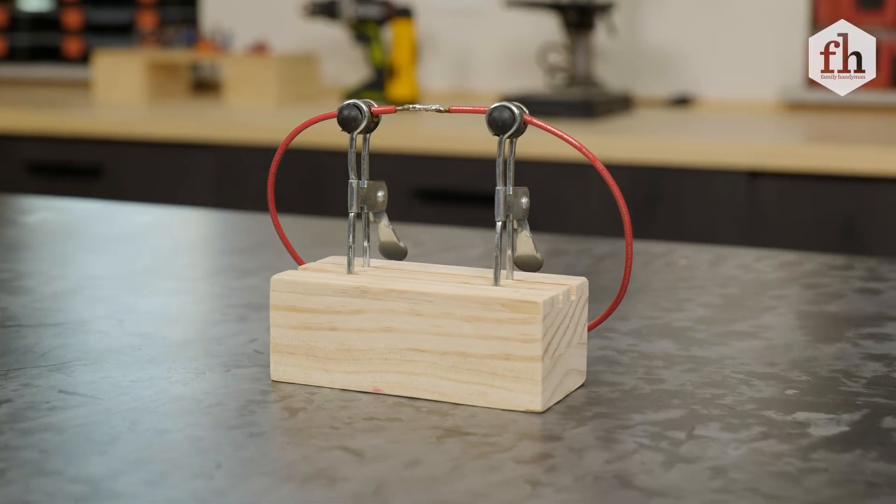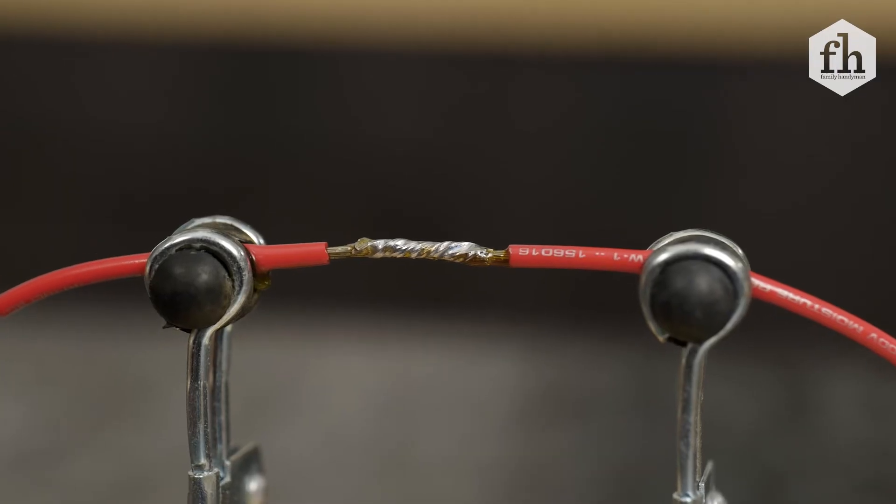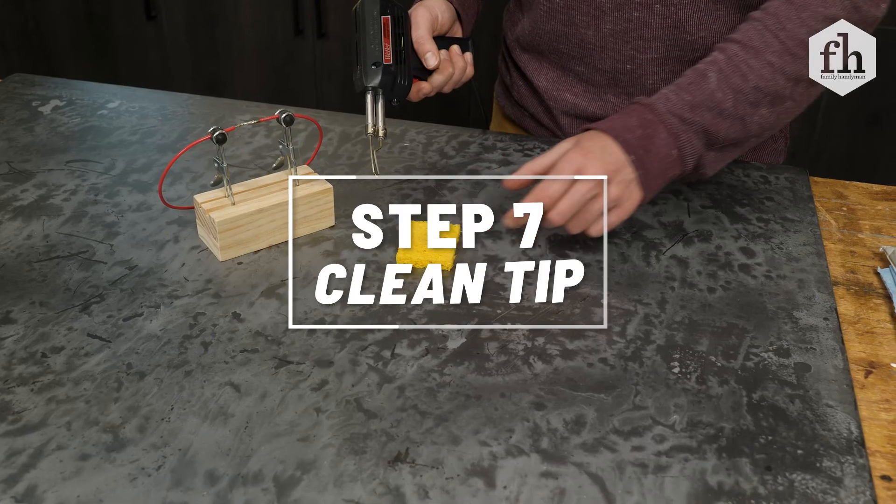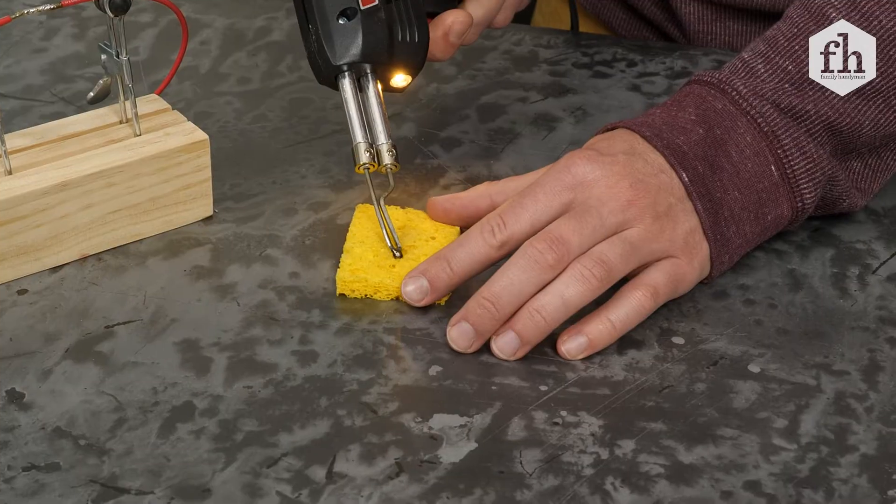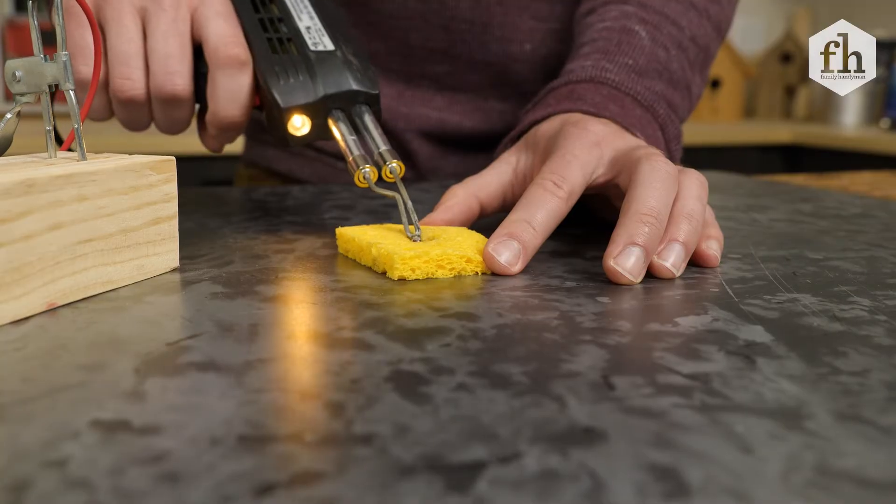Let solder cool down without touching helping hands or wires. Clean off the soldering tip by wiping it against the damp sponge.